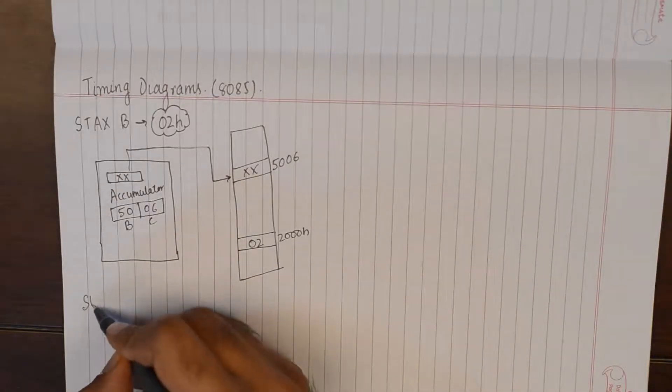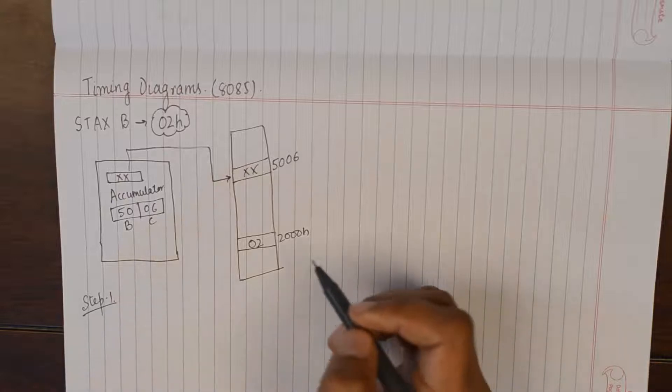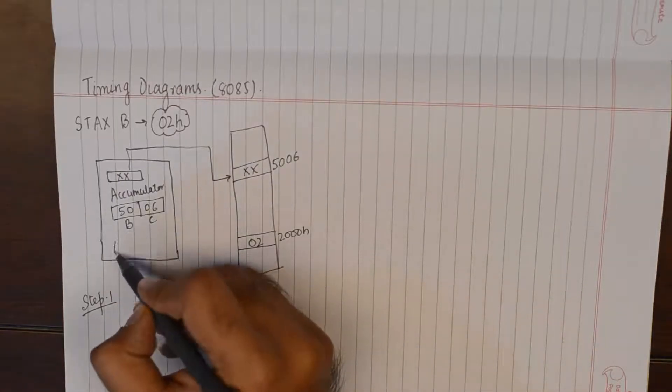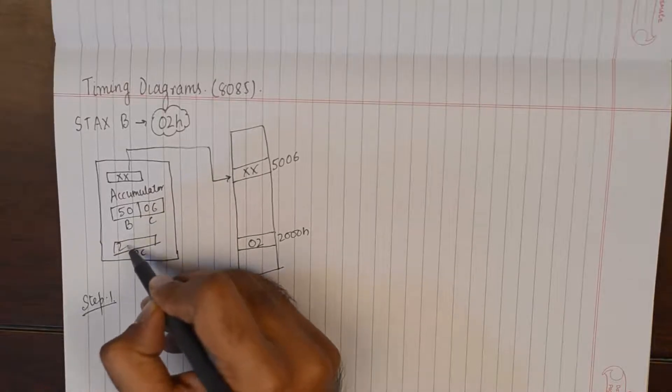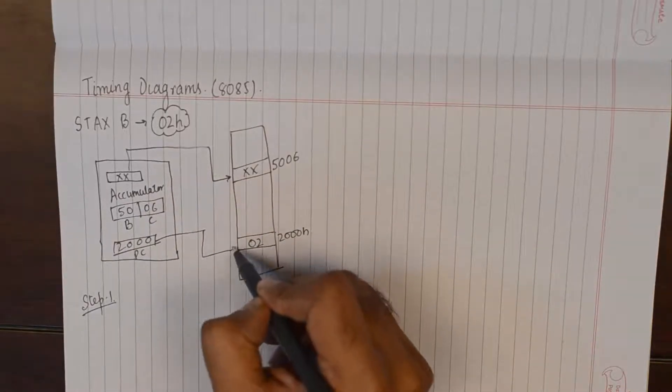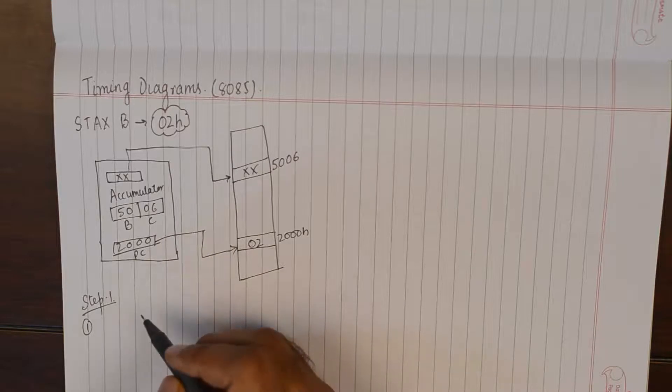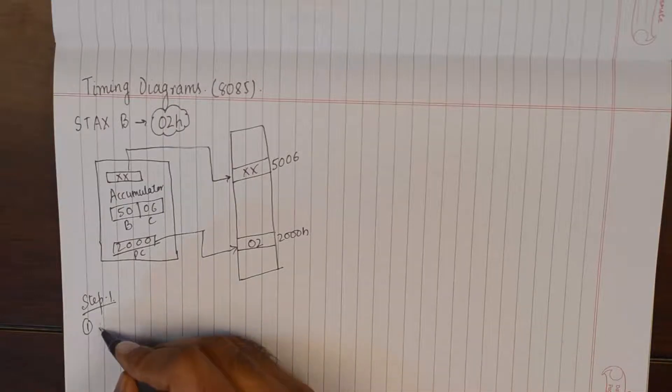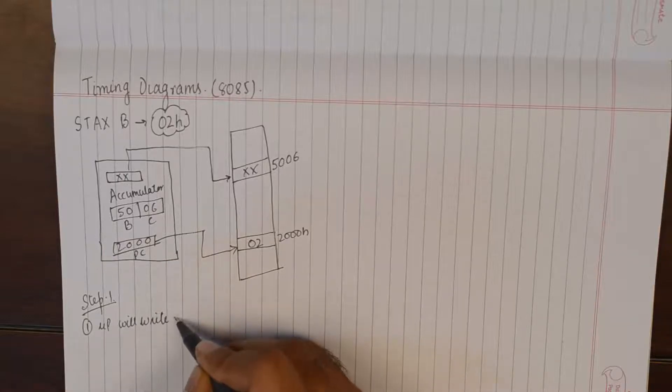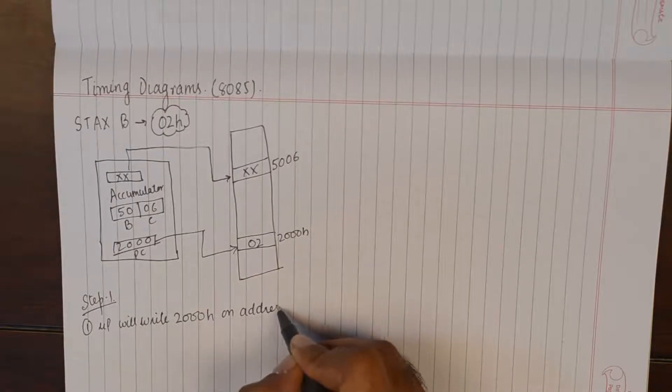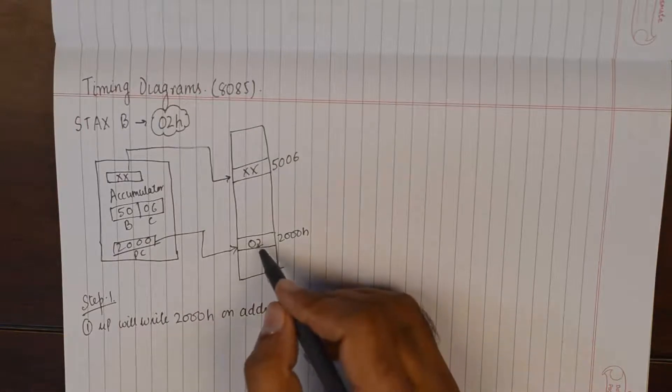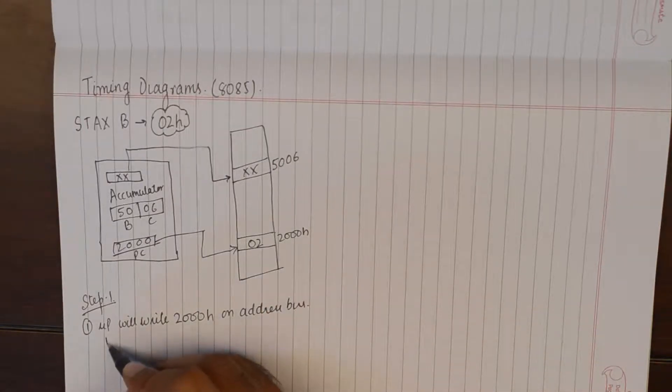So step number one will be our program counter will point to 2000 and in simpler terms, in more understandable statement, we can say microprocessor will write 2000H on address bus and it will go to this location to fetch the opcode for our instruction STAX B.